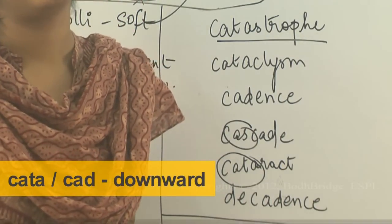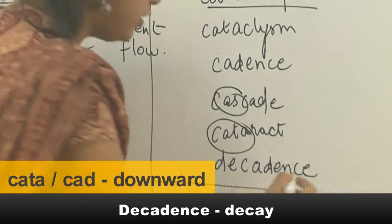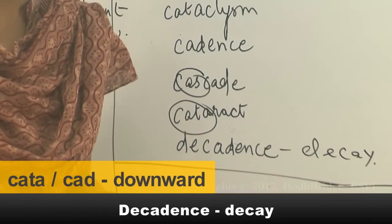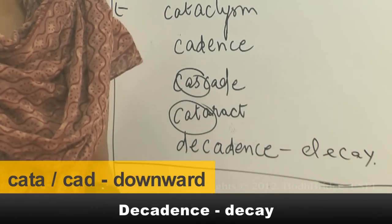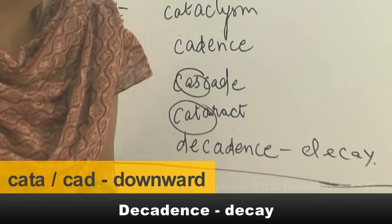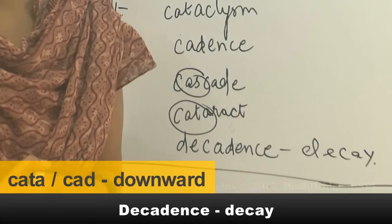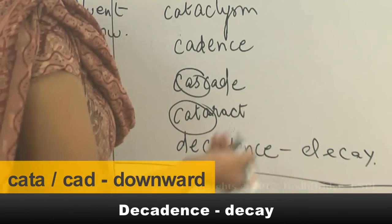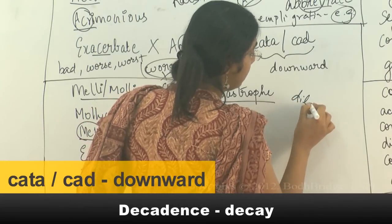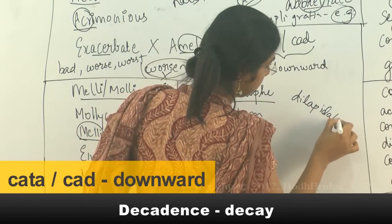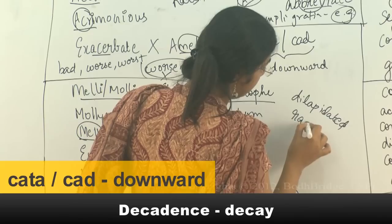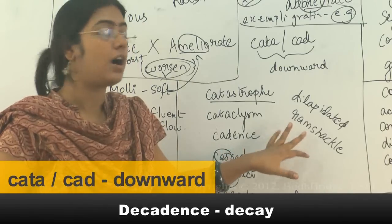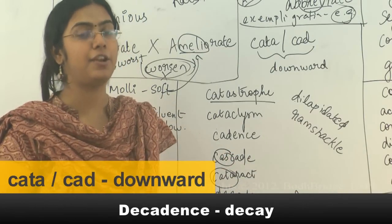Decadence means to fall into bad maintenance, from which you get decay — the verb form. When something decays, it rots and spoils. For example: 'The house fell into years of decadence and is ramshackle today,' or dilapidated. These two words — dilapidated and ramshackle — are typically used with buildings.